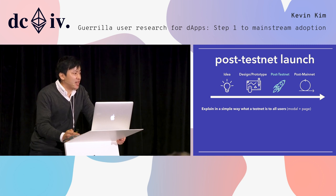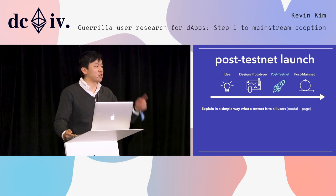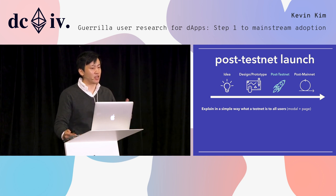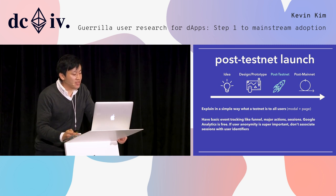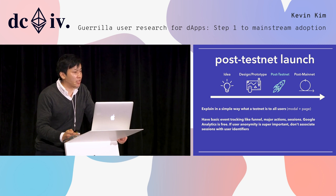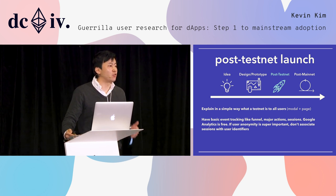Make sure you explain in a simple way what a testnet is to all users. Even though it has the word 'test' in it, it's not obvious how the components work. For example, on MetaMask on your testnet, it still shows a dollar value of the ether in your test wallet, which is confusing. I would recommend basic event tracking — the funnel, major actions, user sessions. Google Analytics is free. If you really care about user privacy, just don't associate sessions with any particular user identifiers. I'm not sure how you could realize if you've hit success without tracking basic metrics.